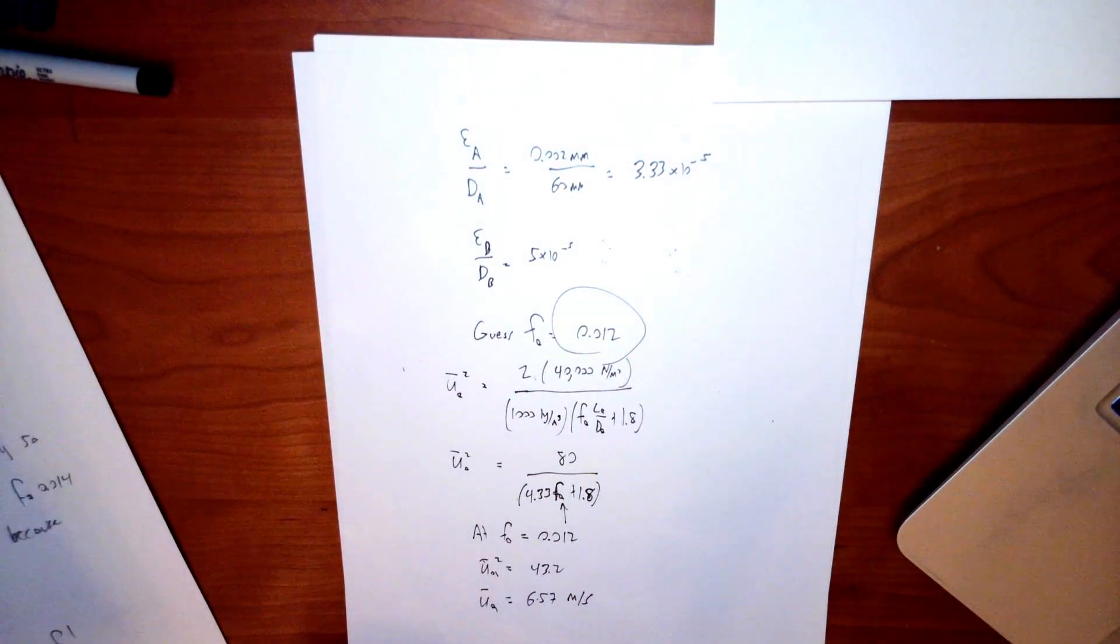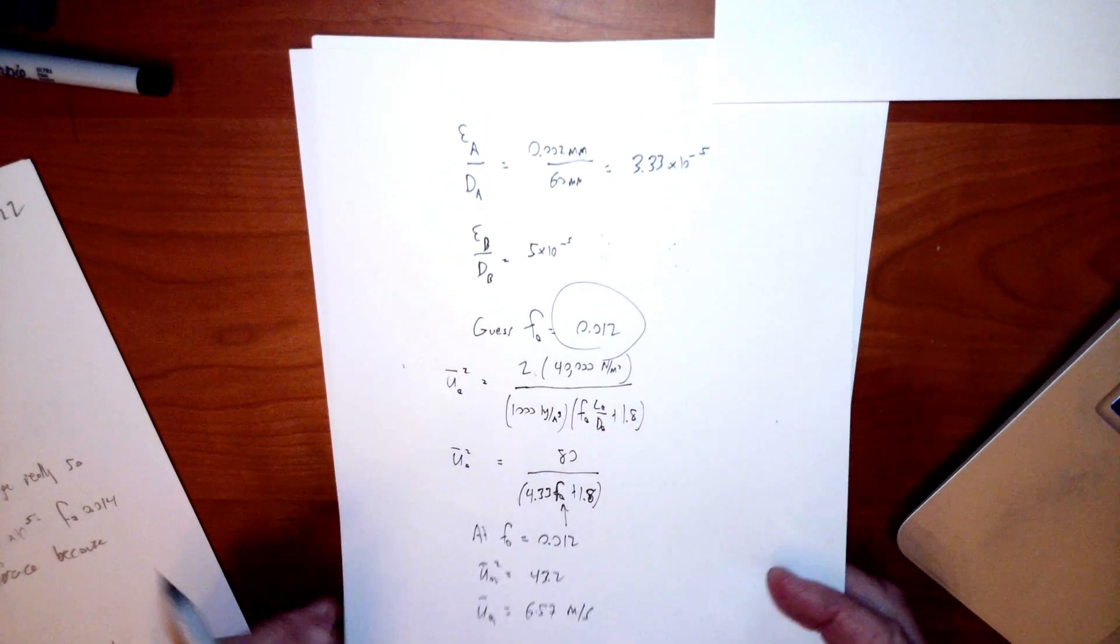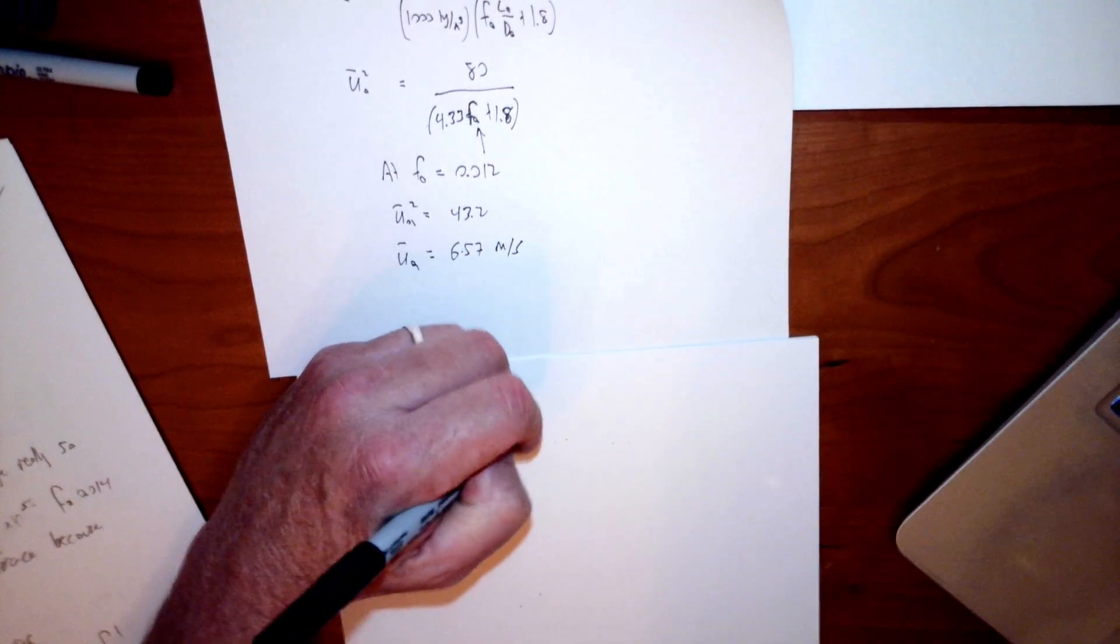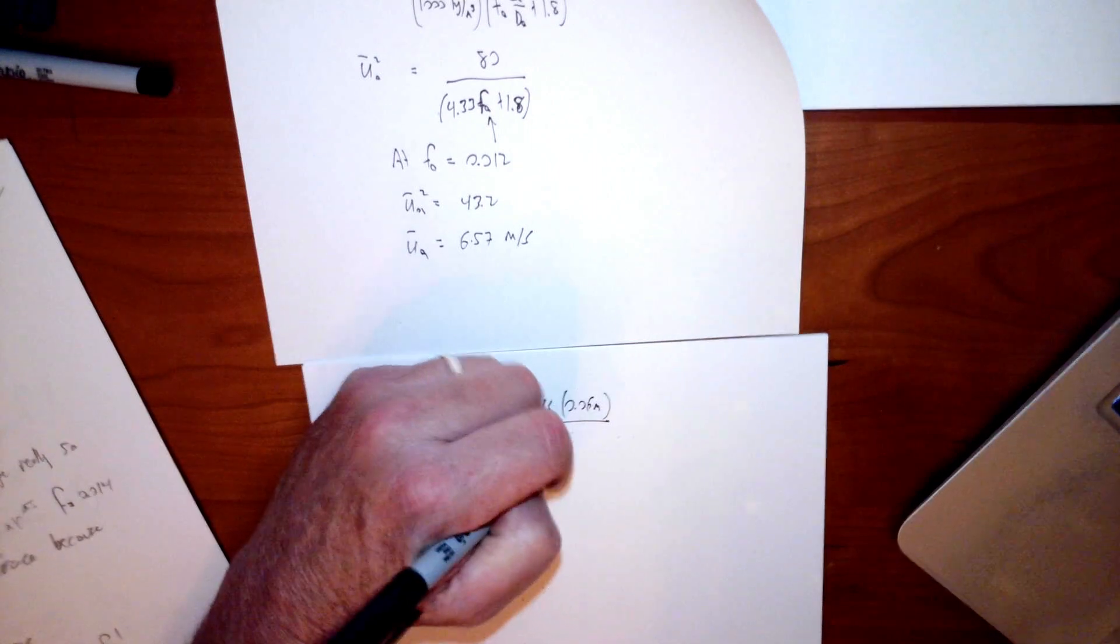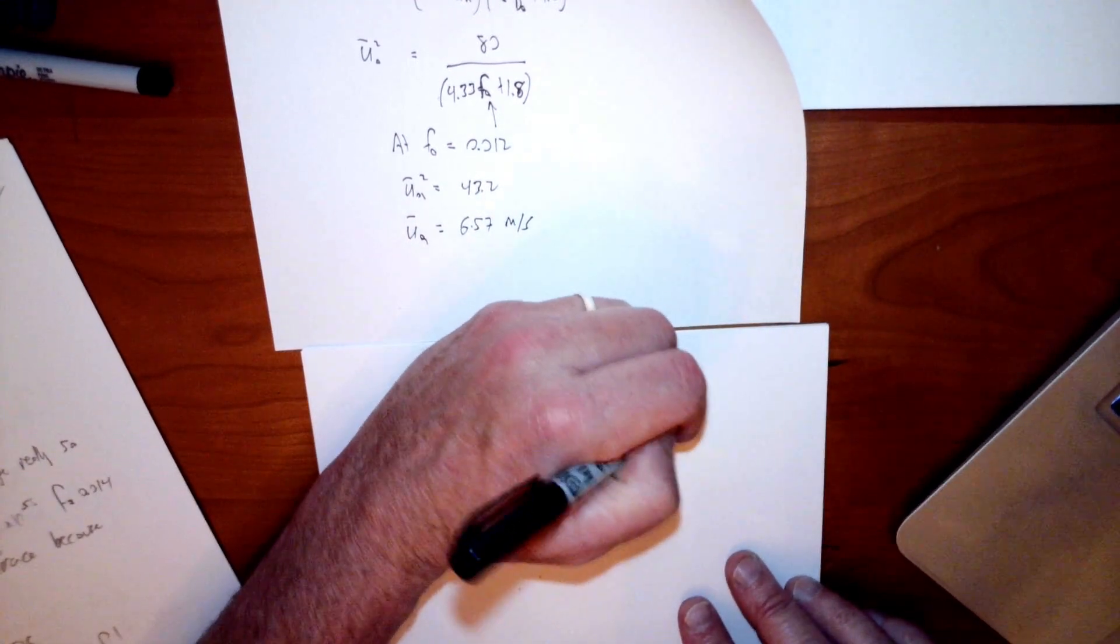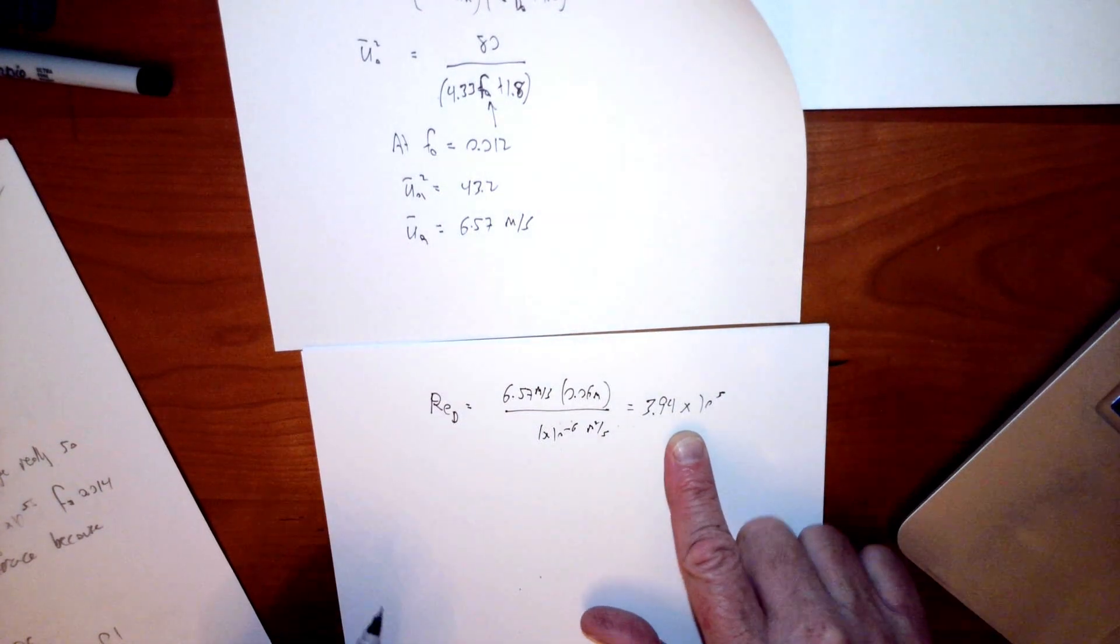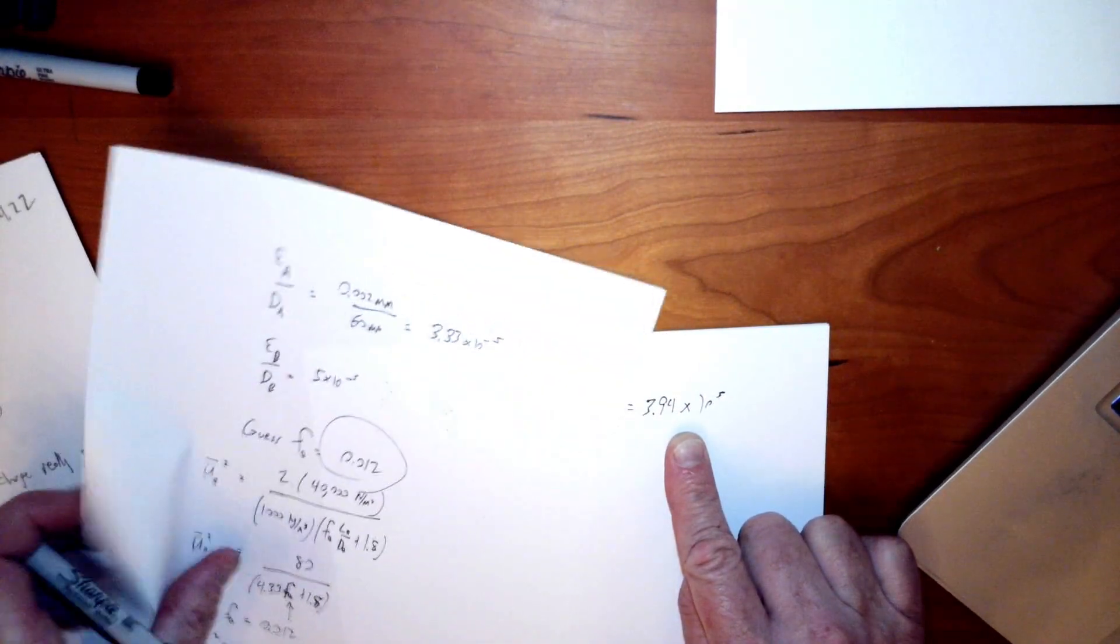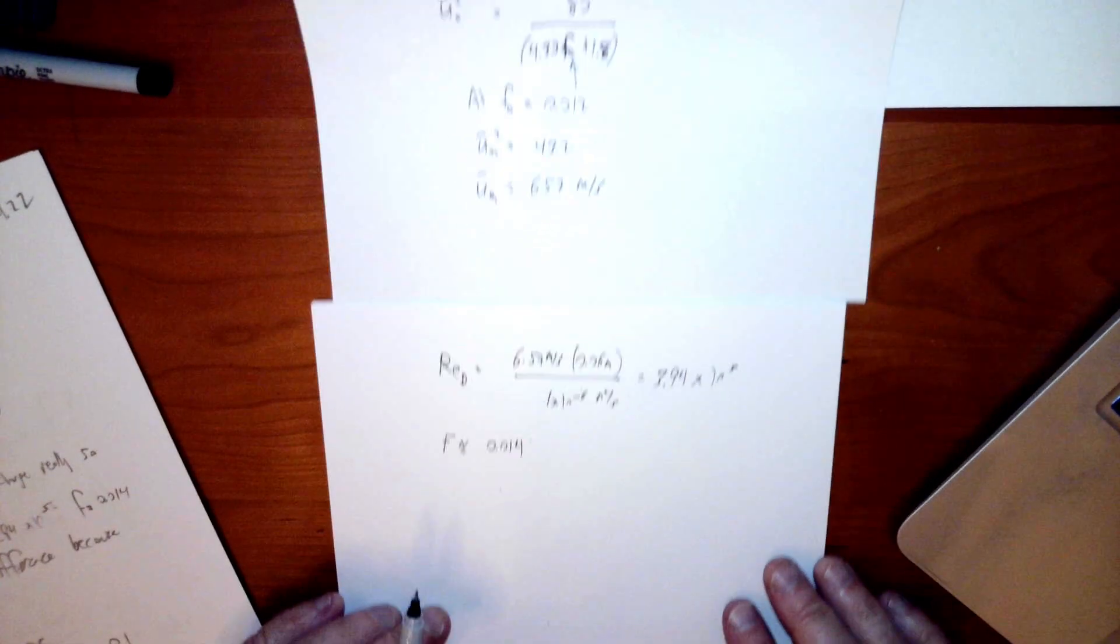Now I have to check to see if that guess was any good. And the way I check that, as we've said many times at this point, but always use more practice, the way I check that is I go ahead and calculate the Reynolds number based on that velocity. So my Reynolds number based on D is equal to 6.57 meters per second, the velocity that I've now calculated, times 0.6 meters, which is the diameter of pipe A, divided by 1 times 10 to the minus 6 meters squared per second, which is the viscosity of water at standard temperature and pressure. That gives me 3.94 times 10 to the fifth is my Reynolds number. I go back to the Moody diagram with this particular Reynolds number. And if I look at the Moody diagram for that Reynolds number and epsilon A over DA of 3.33 times 10 to the minus fifth, I find that my guess wasn't terrible, wasn't quite good enough, I would say. 0.014 is what I'm seeing for a reasonable F for that case.